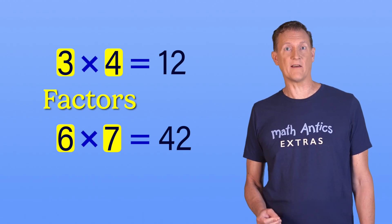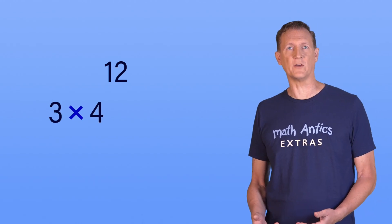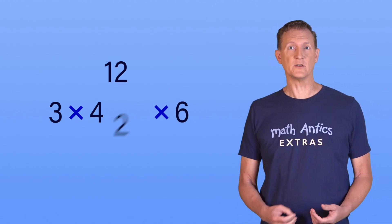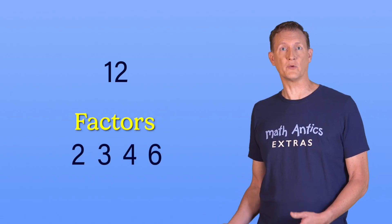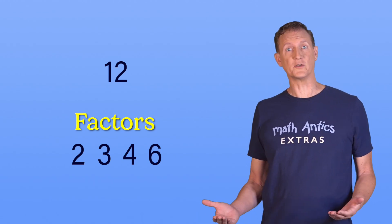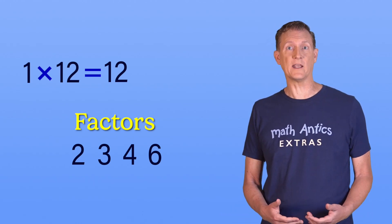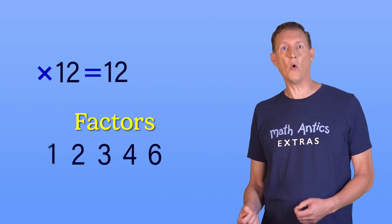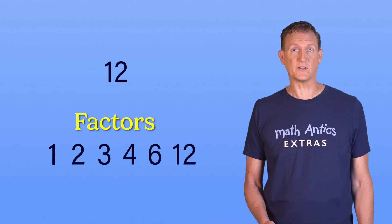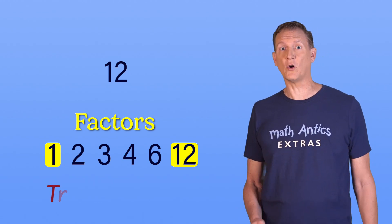It's important to realize that numbers can have more than two factors. Take 12 for example — we multiplied 3 times 4 to get 12, but we could also have gotten 12 by multiplying 2 times 6. That means 2, 3, 4, and 6 are all factors of 12. There's also 1 times 12, because you can multiply any number by 1 and get back that number itself. That means 1 is always a factor of any number, and the number itself is always one of its own factors. Those factors are called trivial factors.